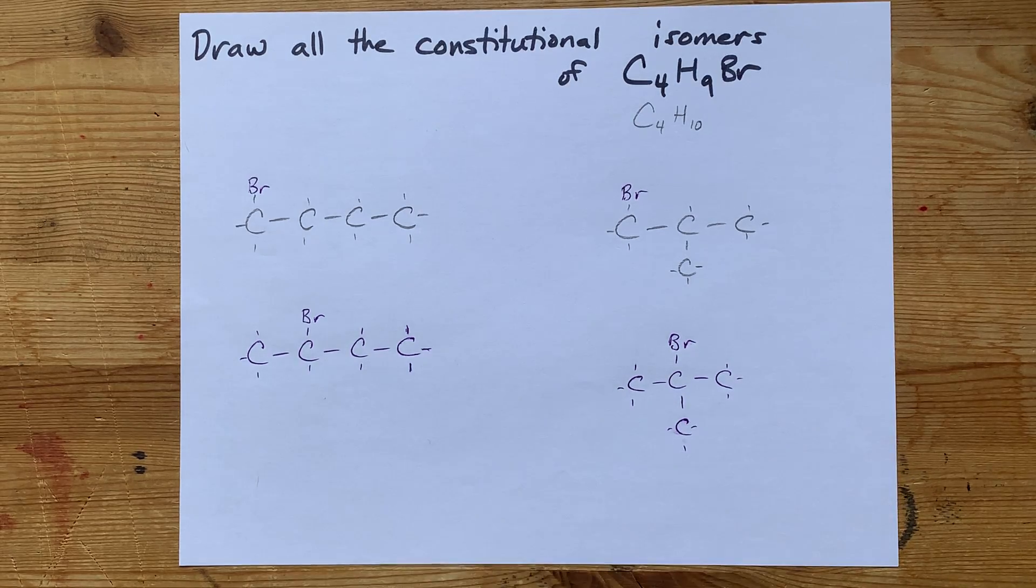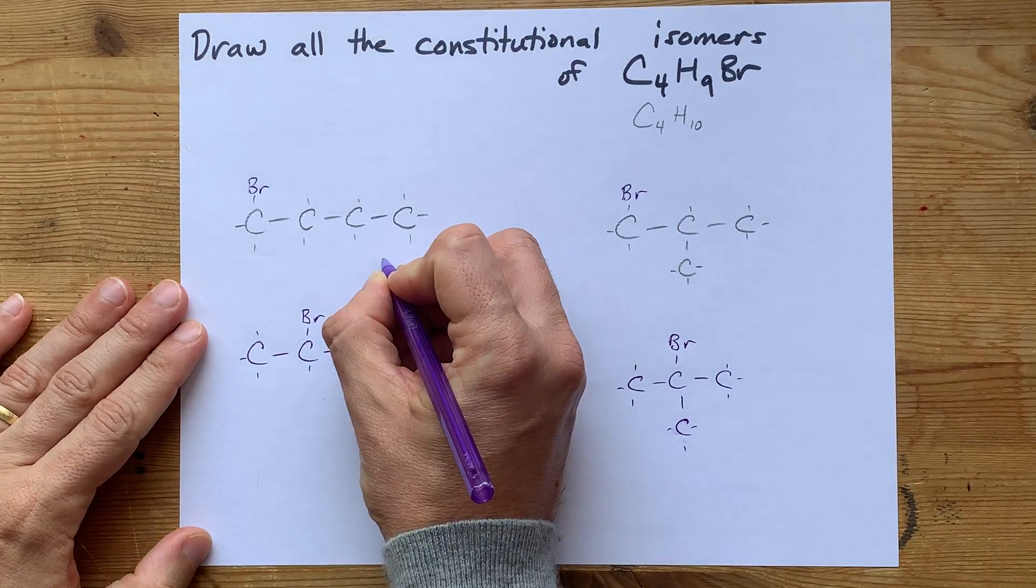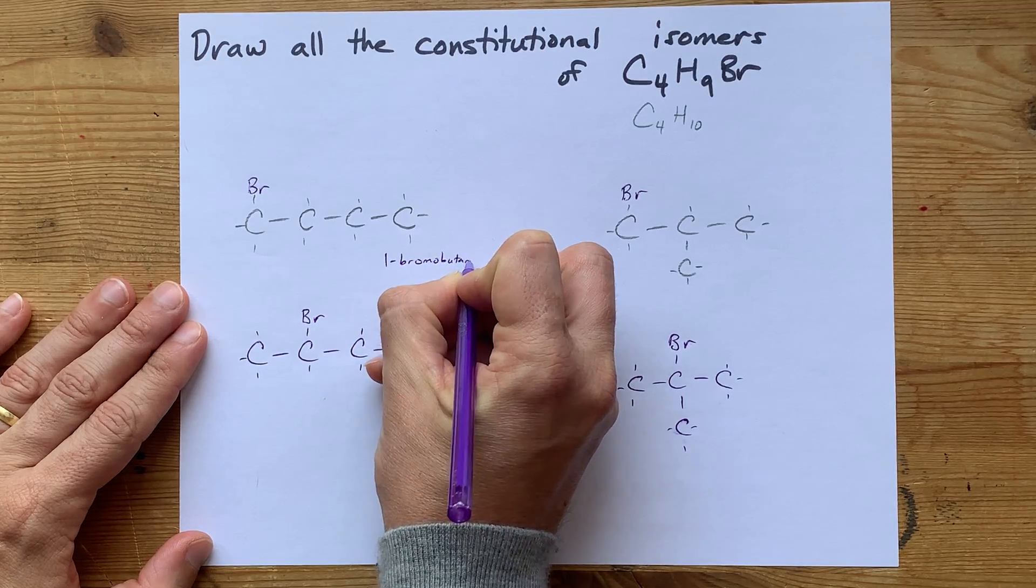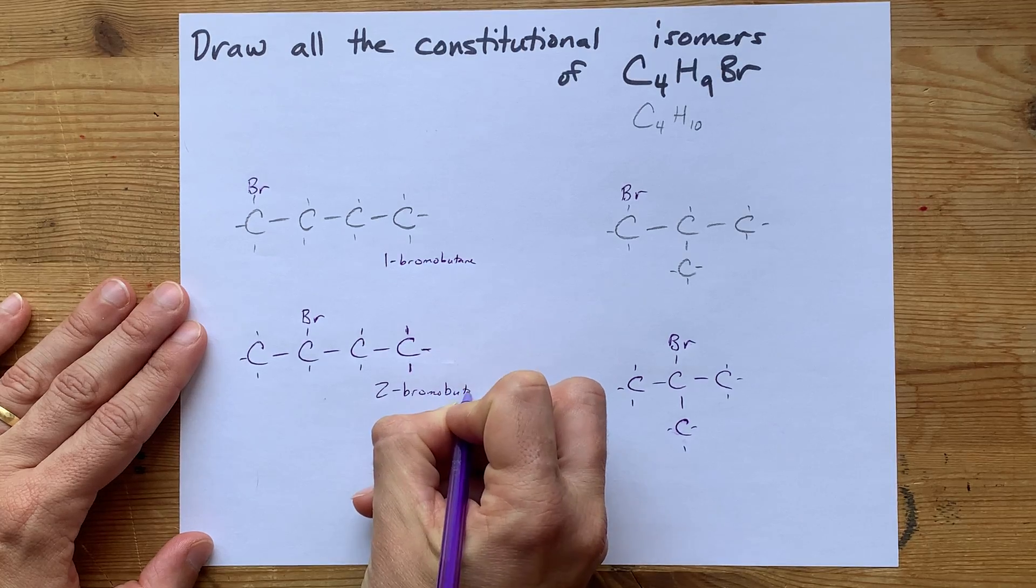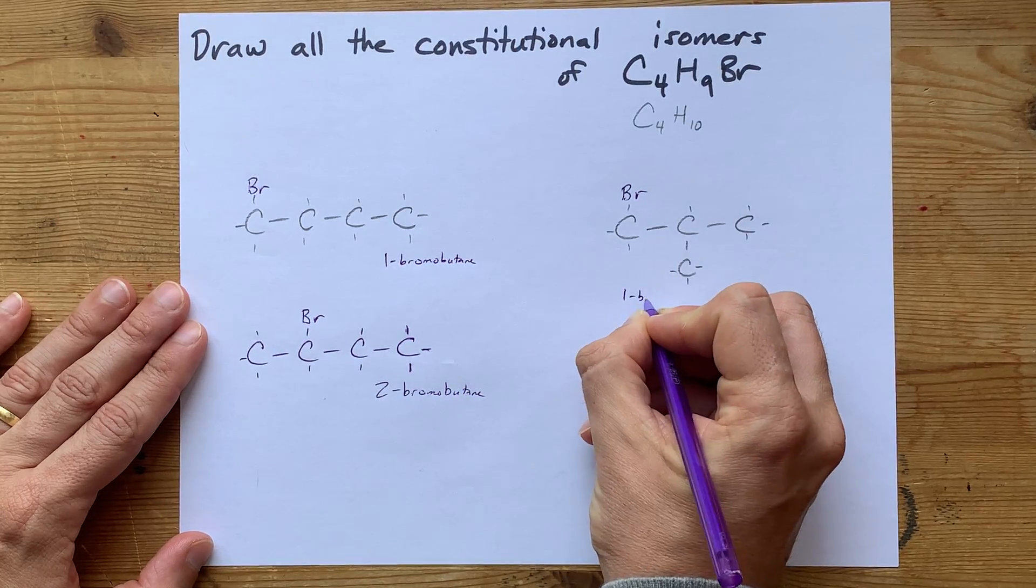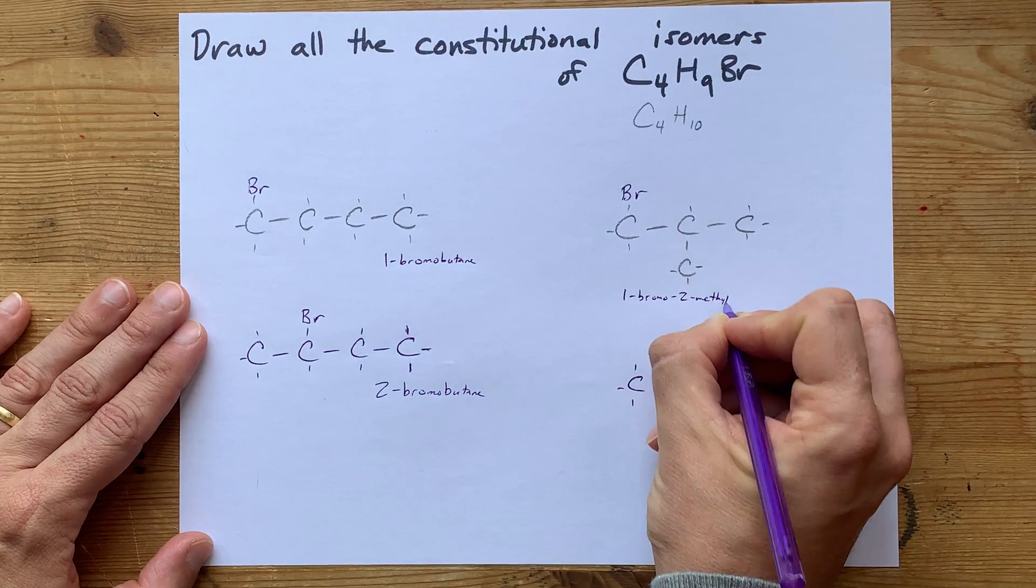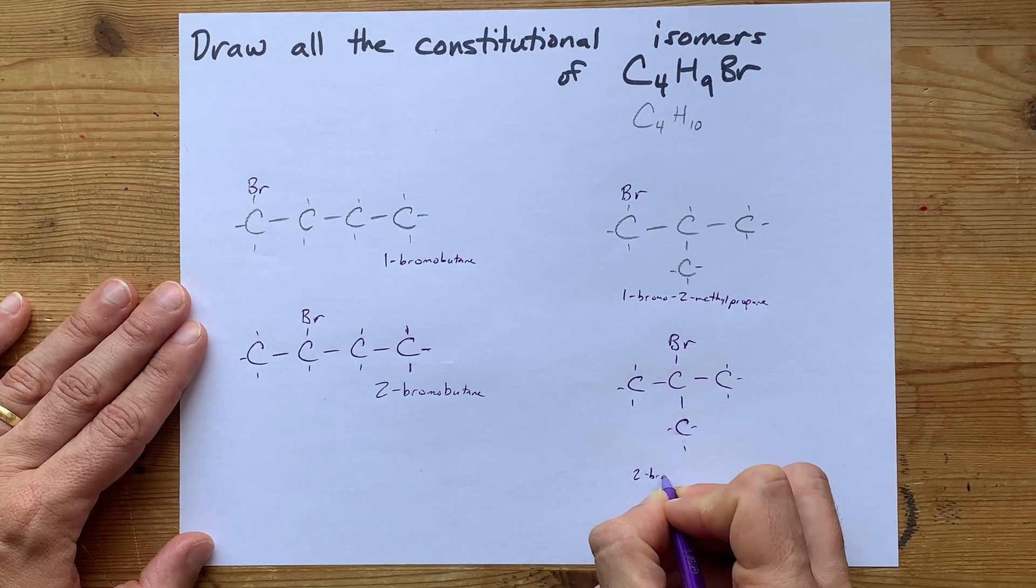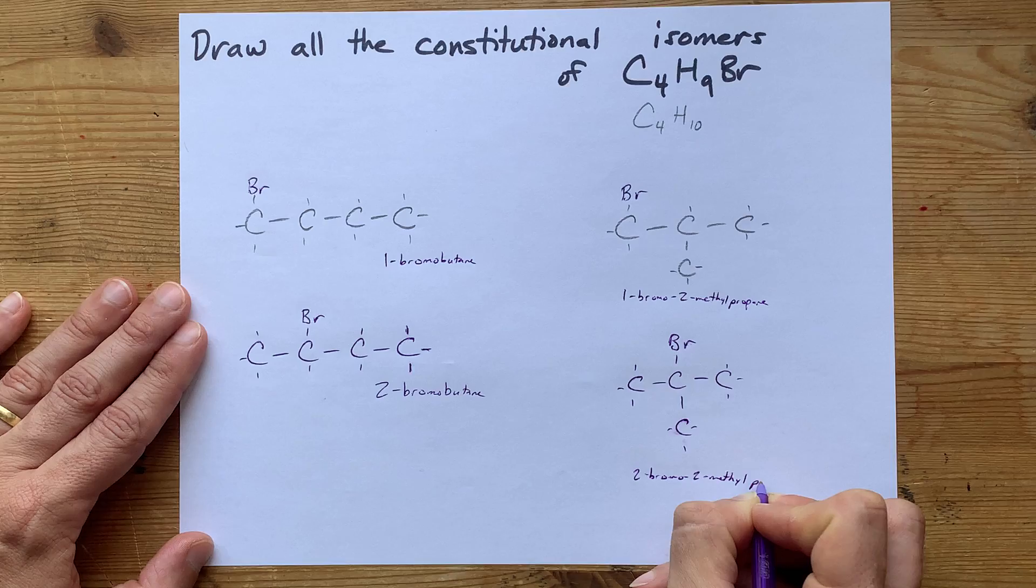Cool. There are four constitutional isomers for C4H9Br. It's 1-bromo-butane, or 2-bromo-butane, or 1-bromo-2-methylpropane, or 2-bromo-2-methylpropane.